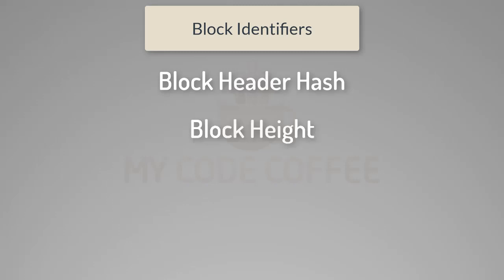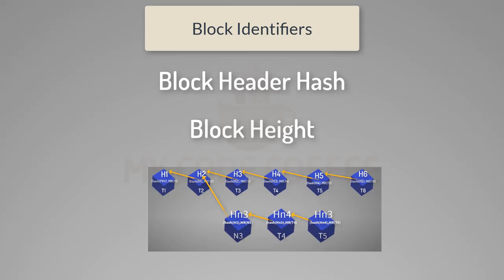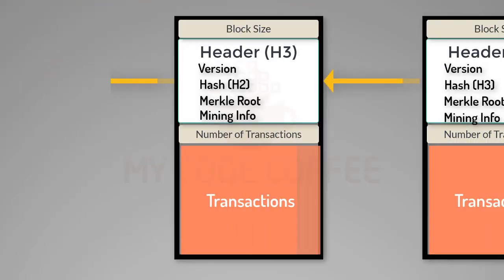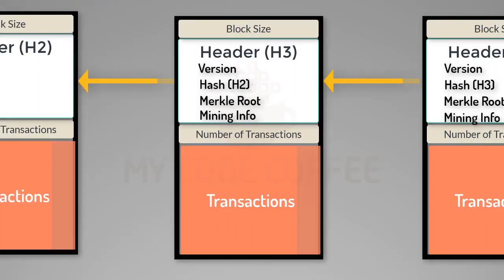One thing to note is that block height may not always identify a single block. The reason is that more than one block may be competing for the same position — this we will see in the section on mining. Now, coming back to this chain of blocks, we must understand that if we change any transaction it will change the header, because the header has Merkle Root, which is the summary of all transactions.